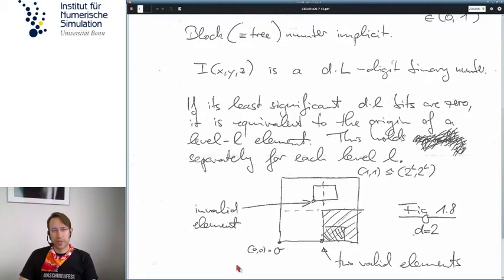So I am just repeating what a valid element is. The least significant d minus L bits that I mentioned must be 0 for the origin to be an integer multiple of the size of an element. Separately, for each level, this is the procedure or the prescription.